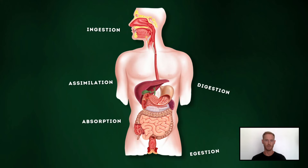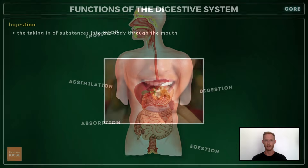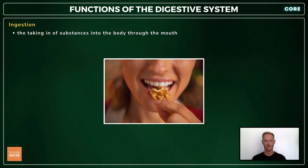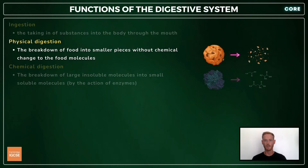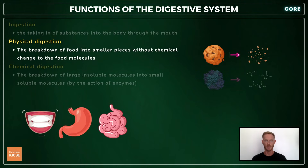Now that you can identify the organs of the digestive system, you need to know a few key terms relating to their functions. Ingestion is the taking in of substances — that is food and drink — into the body through the mouth. Digestion is the breakdown of food molecules, and can be both physical and chemical. Physical digestion is the breakdown of food into smaller pieces without chemical change to the food molecules. This occurs in the mouth when we chew, in the stomach through the action of the muscles contained within its walls, and in the small intestine where bile from the gallbladder physically breaks up fats into smaller droplets by emulsification.